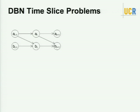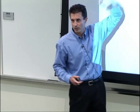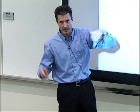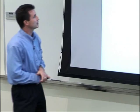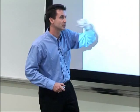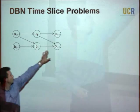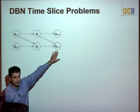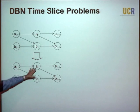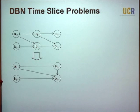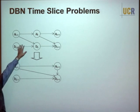Here's the simplest DBN: process A is Markovian and process B depends on A. If we ask what the DBN looks like at twice the time steps — that is, if we marginalize out the intermediate variables — the structure changes. An extra edge appears that wasn't there before.